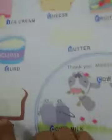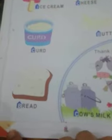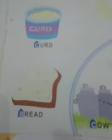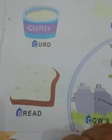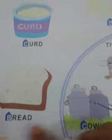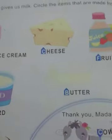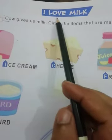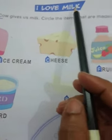All are ready with your GK? All are ready? Okay. Firstly we will do this page. Which page number is this? 28. Okay. This is 28. Let's start reading. I love milk. The heading is 'I love milk.'